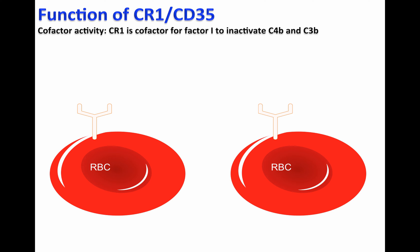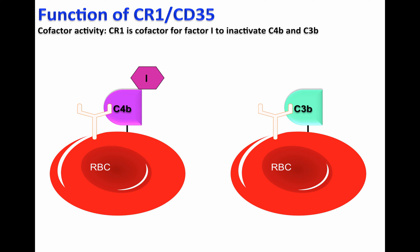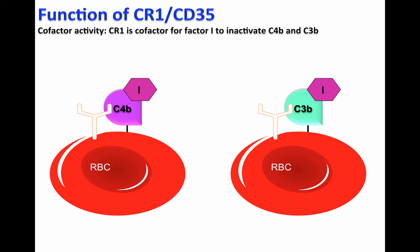In certain circumstances, the complement system can activate on the cell surface of host cells, such as red blood cells, represented by C4b and C3b deposition. CR1 is a cofactor for factor I, which means that we allow factor I to proceed and bind to C4b and C3b to perform their function.